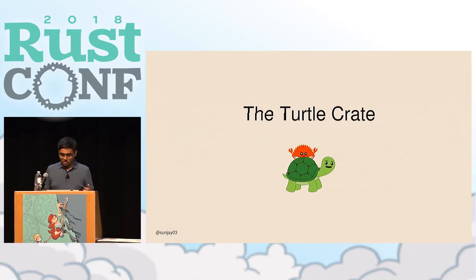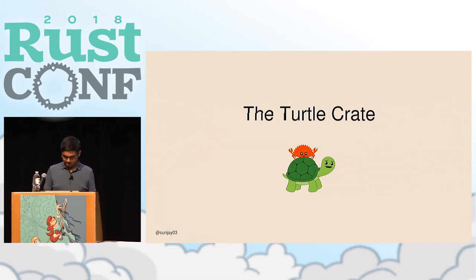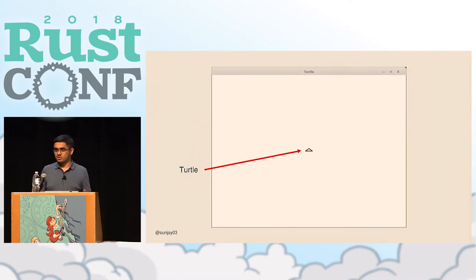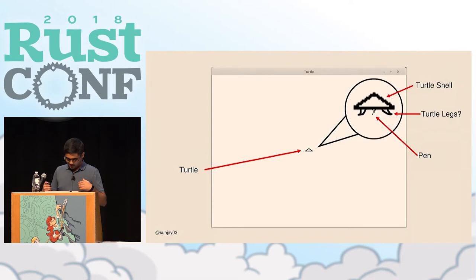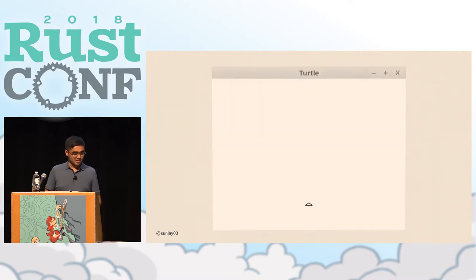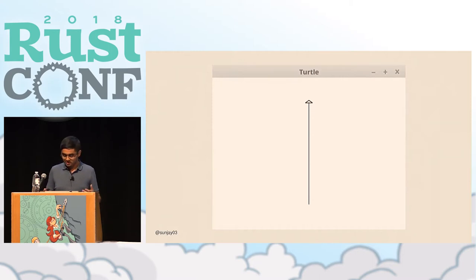Now that you know what I'm actually out to accomplish, let's talk about what Turtle actually is. The concept of the Turtle crate is pretty simple. You have a window, and in the middle of this window is a little triangle — that's the turtle's shell. This turtle is pretty special: it has a pen attached to its tail. We can use that pen to draw pictures. As the turtle moves, it drags its tail, and the pen draws the path that the turtle takes. That's the central concept of the Turtle crate.